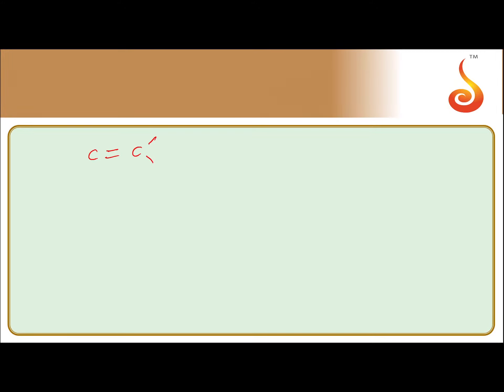Before seeing the first compound, let us see what is the product of oxidative ozonolysis of an alkene. If there is ozone, H₂O₂, and H⁺ on the arrow, it is oxidative ozonolysis. Remove the double bond, put a plus in between, and convert the carbon which is forming the double bond to a carboxylic acid. If one valence is satisfied by hydrogen, convert it into a ketone.